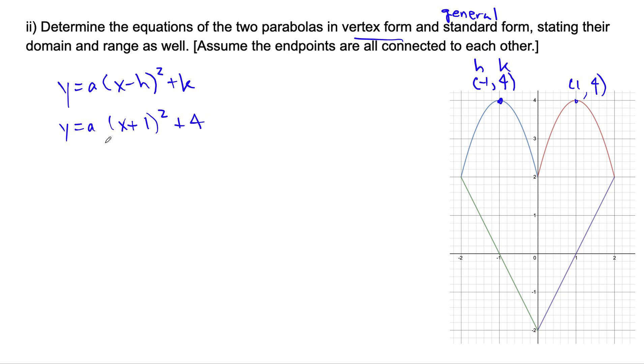All we need to do now is determine the value of a. We can do this in a couple ways. One way is we can substitute in another point. Let's take this for example, which is the coordinate (0, 2). This we can substitute in as x and this for y to determine the value of a.